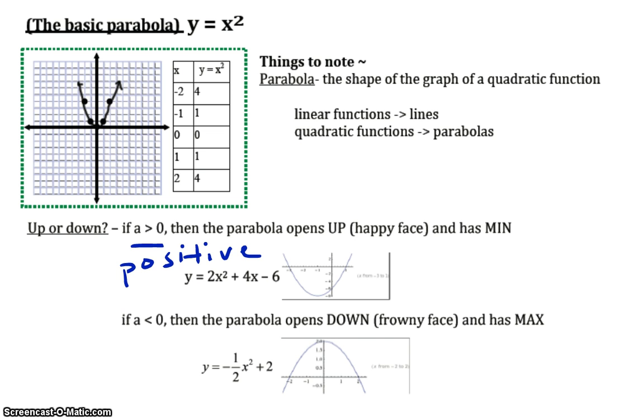Here, in this example, I have y equals 2x squared plus 4x minus 6, a is 2. So, I know that my parabola is going to open upwards. It's going to be a happy face, positive, happy. And take a look at that special point on the graph. Do I have a maximum point, a highest point, or do I have a minimum point, a lowest point? Well, I actually have a lowest point, and that is a point called the minimum.